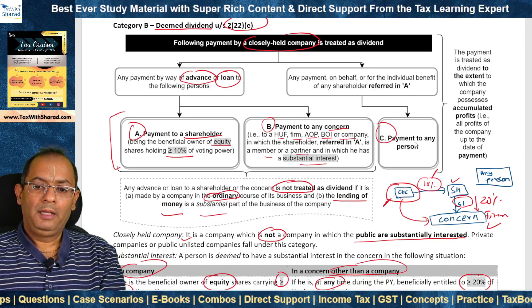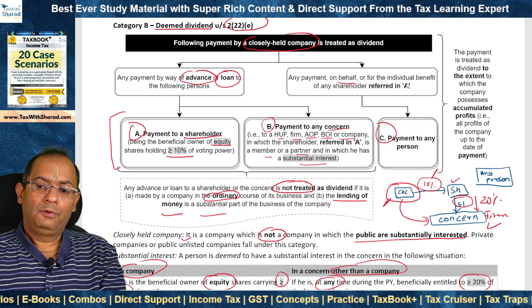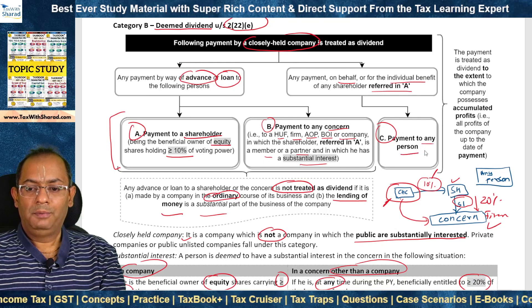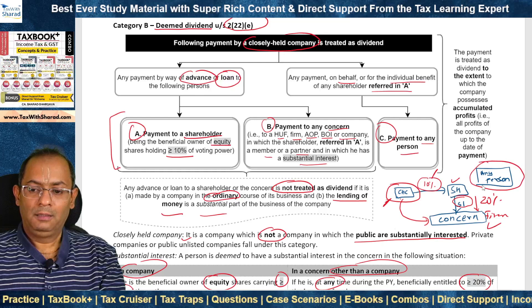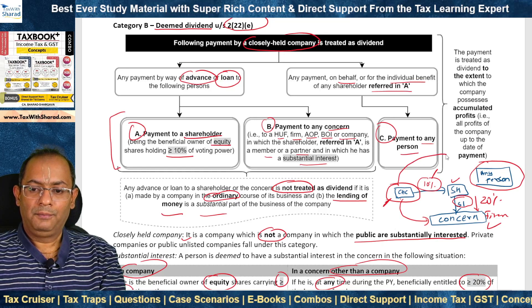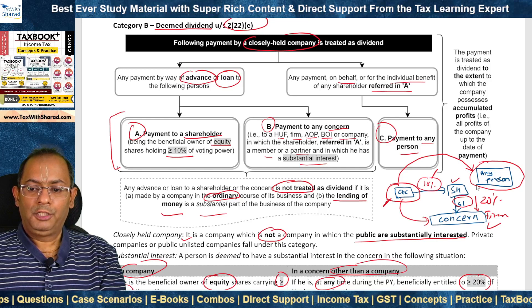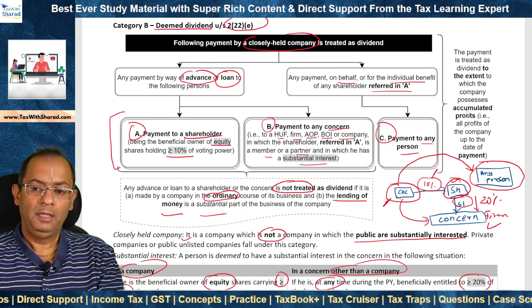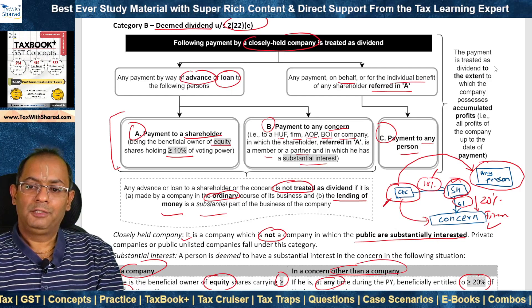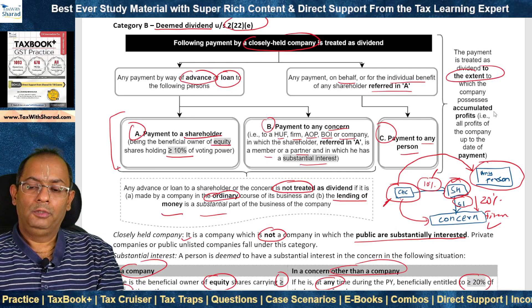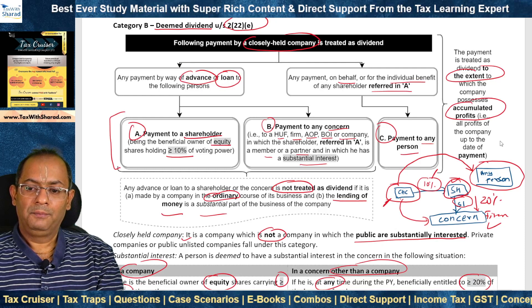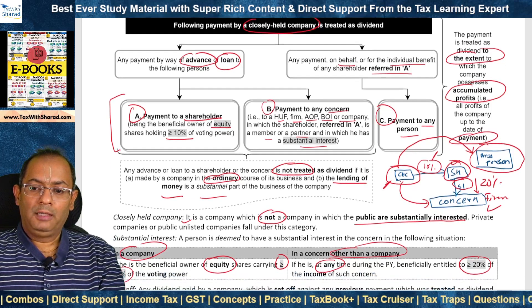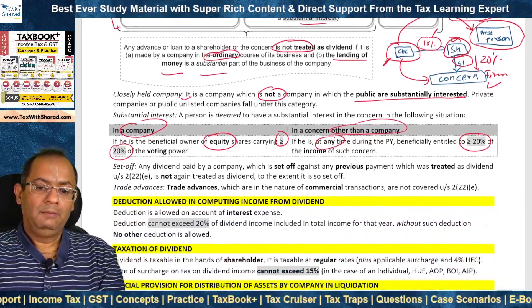Category (c): any payment made on behalf of or for the individual benefit of the shareholder referred in category (a), and the payment can be made to any person — that is treated as deemed dividend. In all these cases (a), (b), (c), the payment is treated as dividend to the extent of accumulated profits of the company up to the date of payment. Beyond this extent it is not treated as deemed dividend.